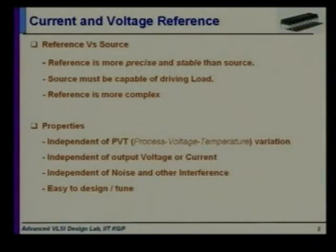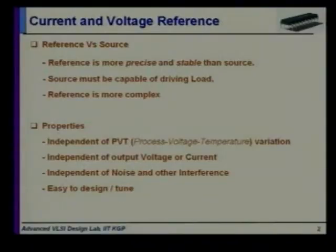In the last lecture, you went through the differential amplifier. In a differential amplifier, you need a current source in the tail, which is called the tail current source. So, how to generate those tail current sources, and in some cascaded configurations, you may need some voltage references also to bias the MOSFETs. How to generate these current and voltage references?